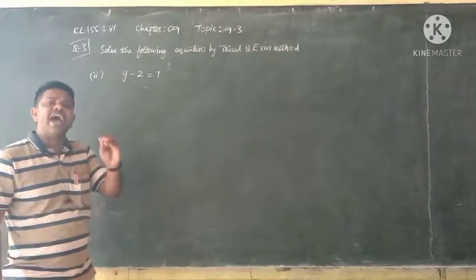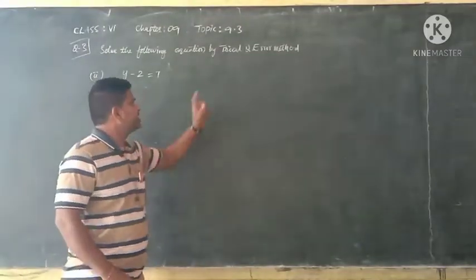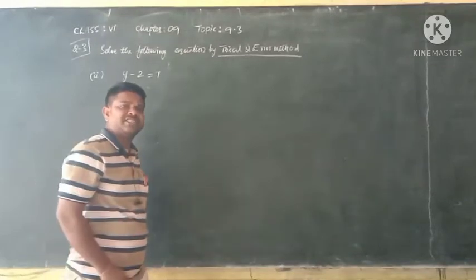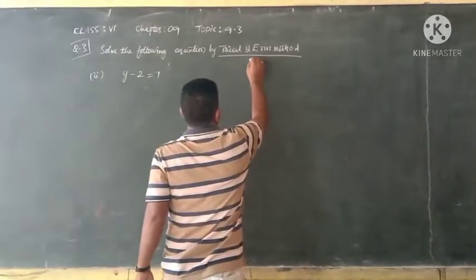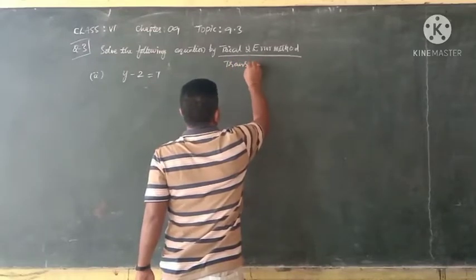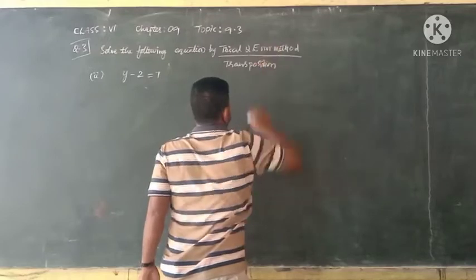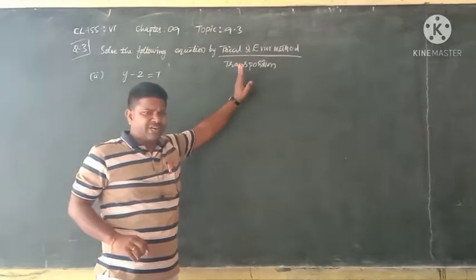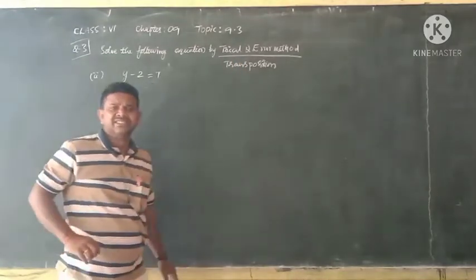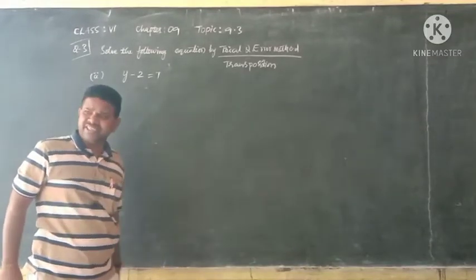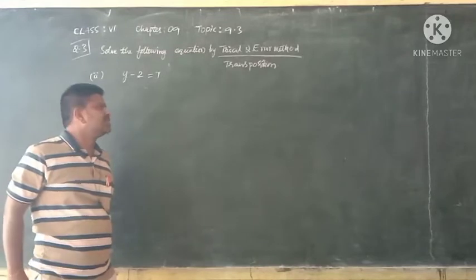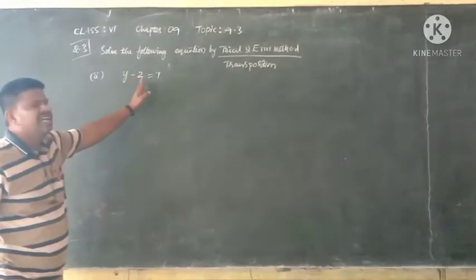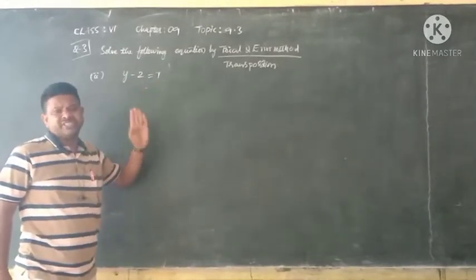To find the solution or root of the equation, we have two ways: the trial and error method, and the transposition method. The transposition method is not included in our class, so we will concentrate only on the trial and error method. Let us find the solution of y minus 2 equals 7 using trial and error.